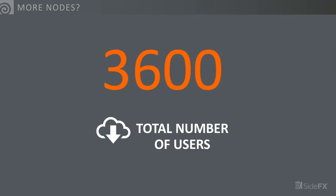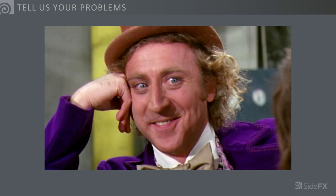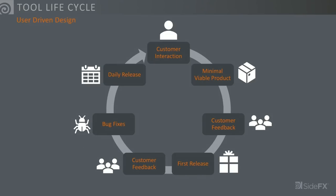Right now we have about 3,600 users using these tools, which is awesome — six months ago that slide said about 300. So there's clearly value in adding these tools and hearing from you in terms of what we can build next. We want to hear what your problems are — that's how we figure out what to do. Our development cycle: we come speak to you, get a sense of your workflow and pipeline problems, make a minimum viable product, get feedback, do a couple of iterations, and then release that to the community.